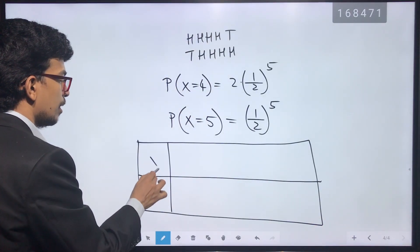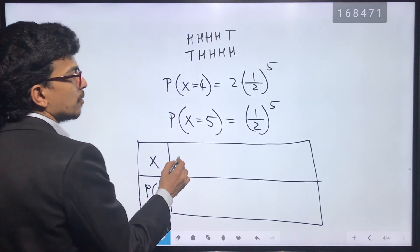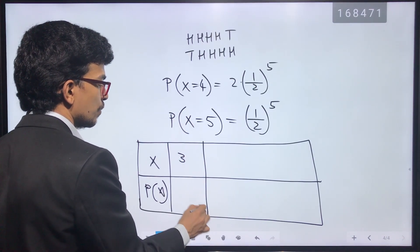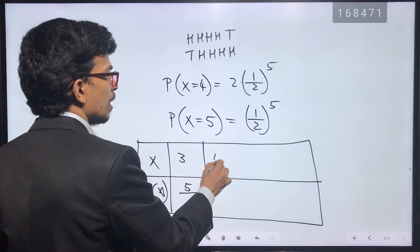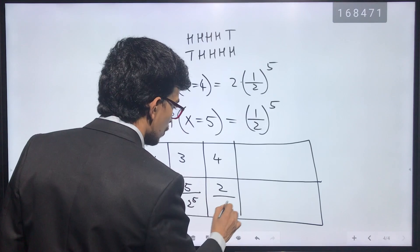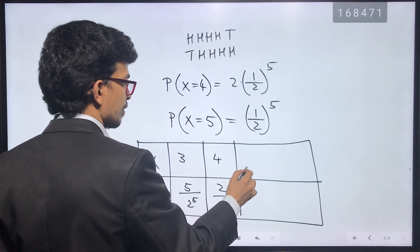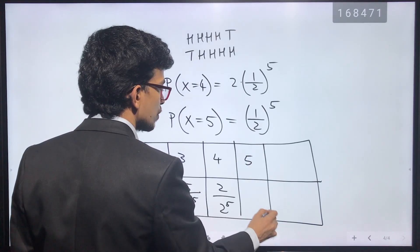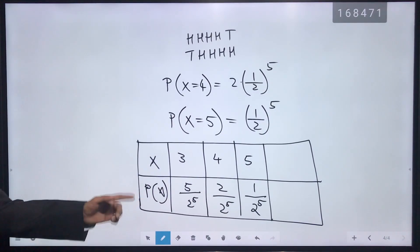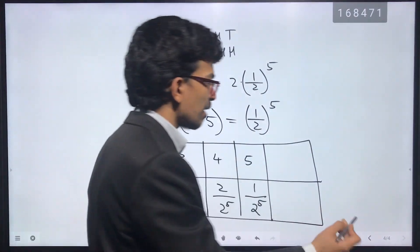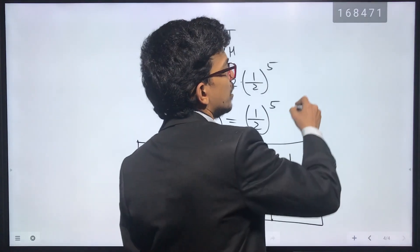Building the probability distribution table: X takes value 3 with probability 5 divided by 2^5, value 4 with probability 2 divided by 2^5, value 5 with probability 1 divided by 2^5, and value minus 1 with the remaining probability.